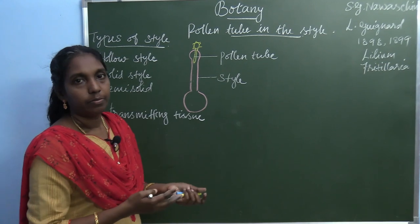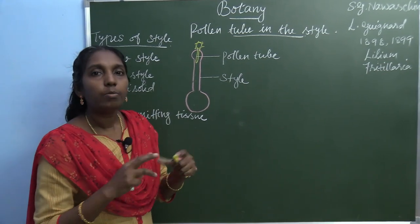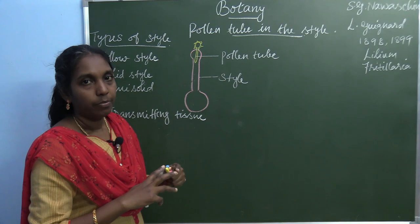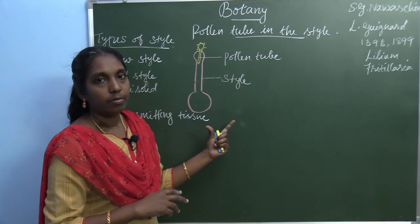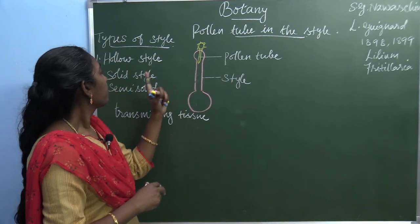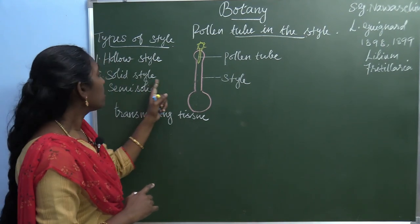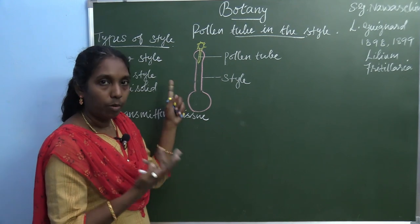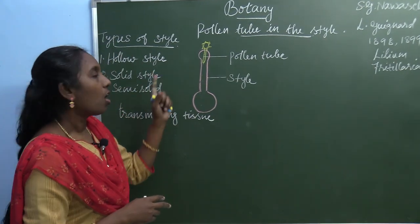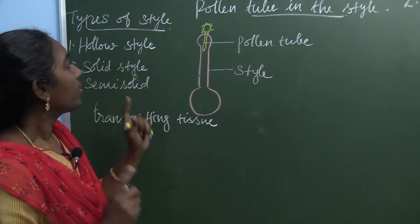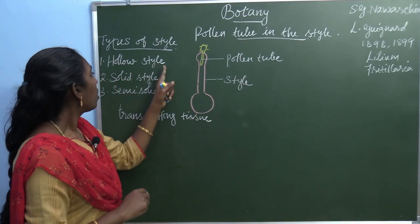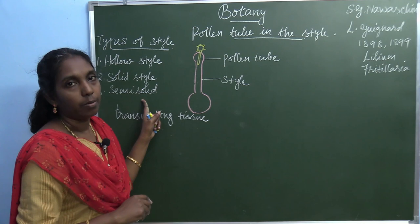The semi-solid type of style is intermediate between the hollow style and the solid style. There are different opinions among authors: some suggest that transmitting tissue is present only in the solid style, while others suggest that transmitting tissue is also present in the hollow style. So in summary, there are three different types of style: hollow type, solid, and semi-solid.